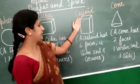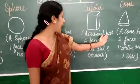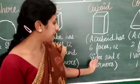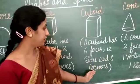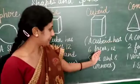Now cuboid. A cuboid has six faces, twelve sides, and eight corners.